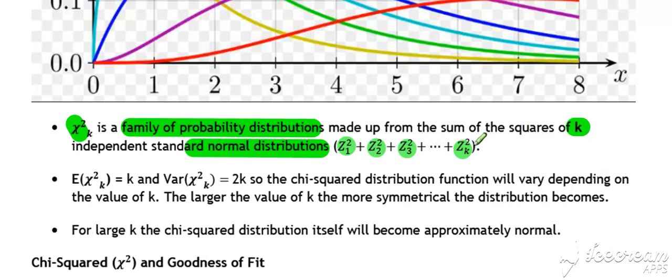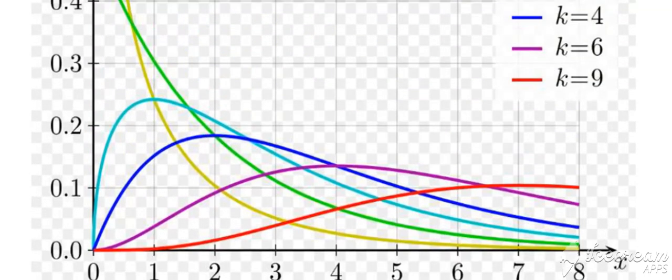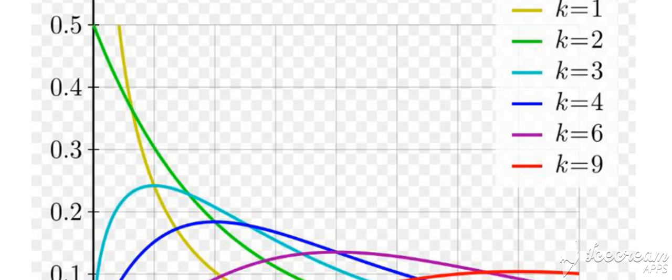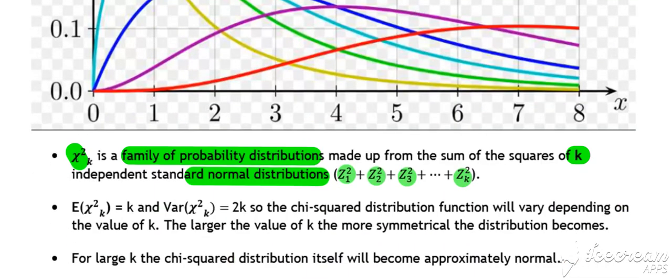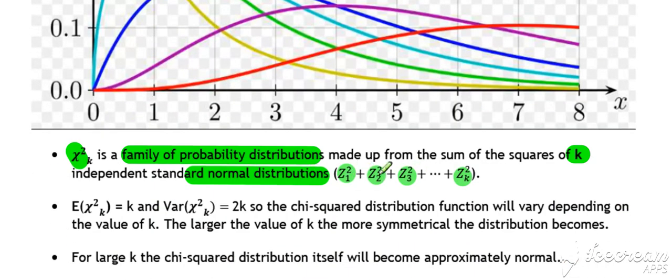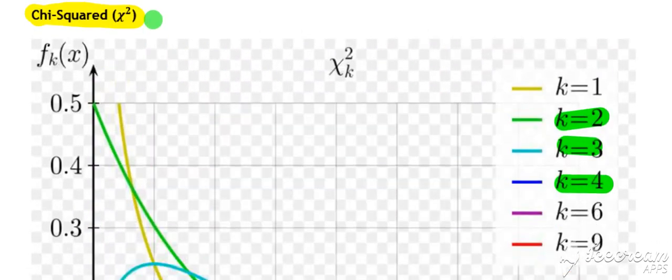Looking at what it looks like depending on the number of normal distributions that we square and add together, the chi-squared distribution takes a different shape. The graph above shows what the chi-squared looks like for different values of k. These k values represent the number of observations—the number of different standard normal distributions we've added together to get our chi-squared distribution.